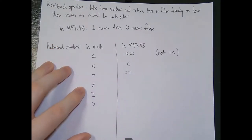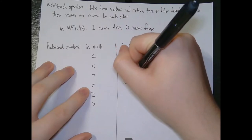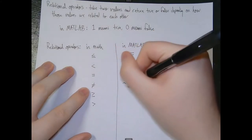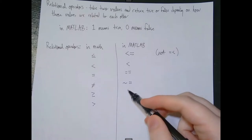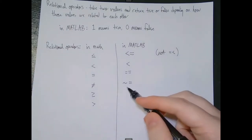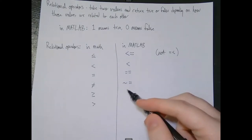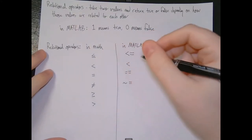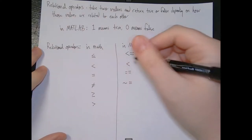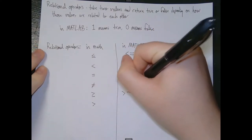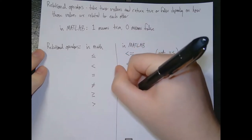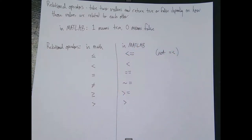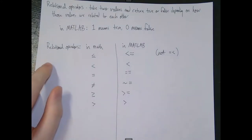Not equal to is written using a tilde and an equals sign (~=). The tilde is on a US American keyboard to the left of the number 1, directly below the escape key and above the tab key. Greater than or equal to is similar to less than or equal to — just put the greater than sign followed by equals. And greater than is just the greater than sign alone. Those are all the relational operators in MATLAB.